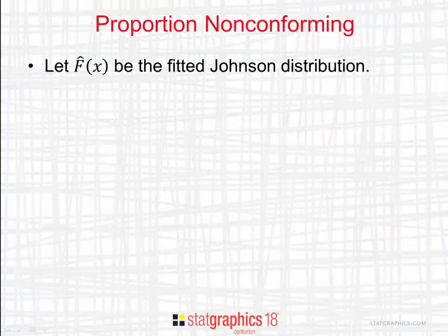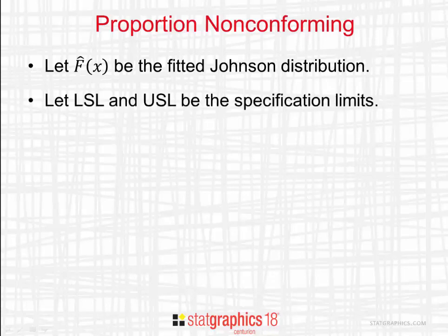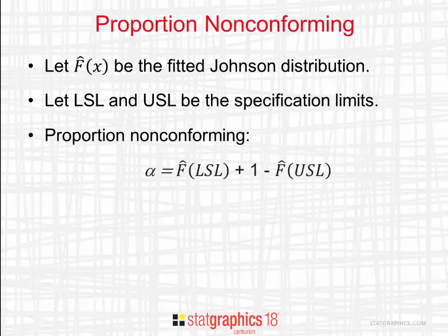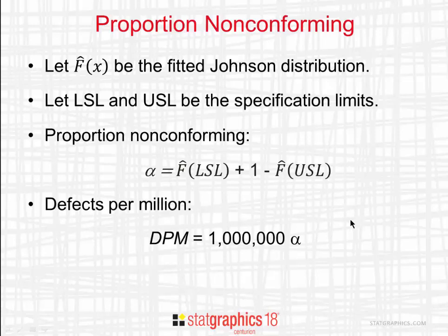We can use the fitted Johnson distribution to estimate the proportion of wafers that do not conform to the specifications. Let F-hat sub x be the fitted Johnson cumulative distribution function, and let LSL and USL be the specification limits. Then the estimated proportion of wafers that do not conform — alpha — is F-hat at the lower specification limit plus 1 minus F-hat at the upper specification limit. We can also multiply alpha times one million to get the statistic called defects per million, which is the estimated number of wafers out of every million produced that will not be within specification limits.